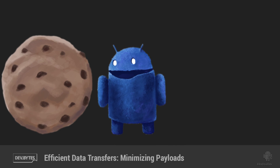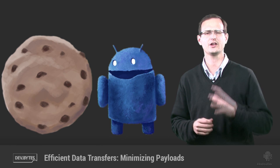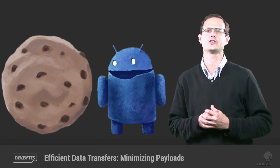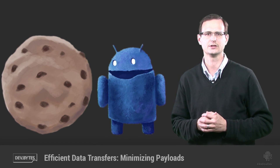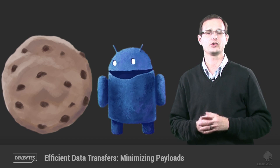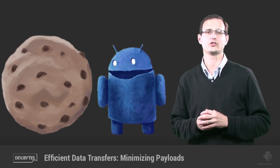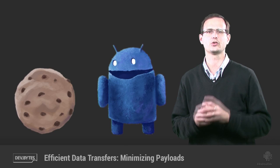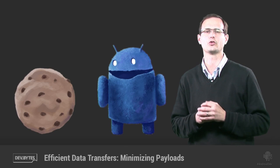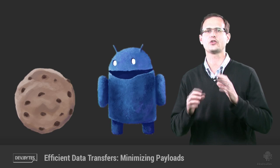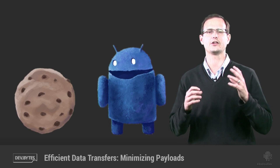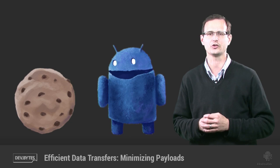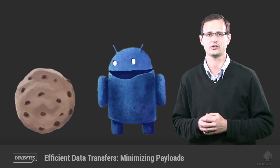In order to minimize the battery drain associated with data transfers, it's good practice to use the big cookie model to batch and bundle transfers using sync adapters and eliminate unnecessary polling with Google Cloud Messaging. Having moved all of your transfers into as few batches as possible, this DevByte will look at ways to reduce the overall size of the cookie — that is, to transfer as little data as possible and drain as little battery as possible each time we do have to do a transfer.